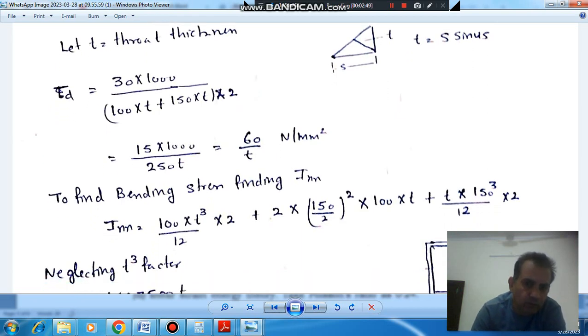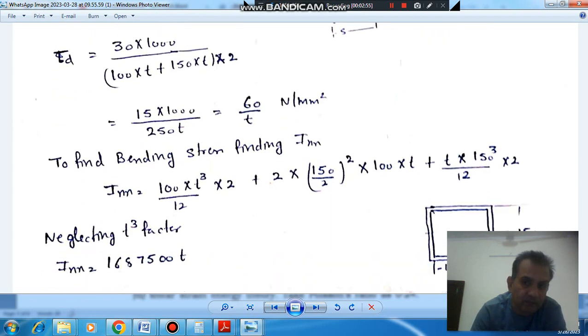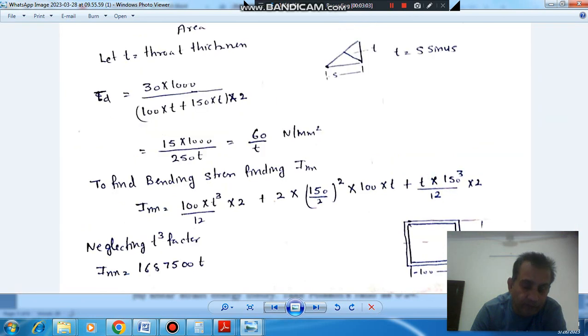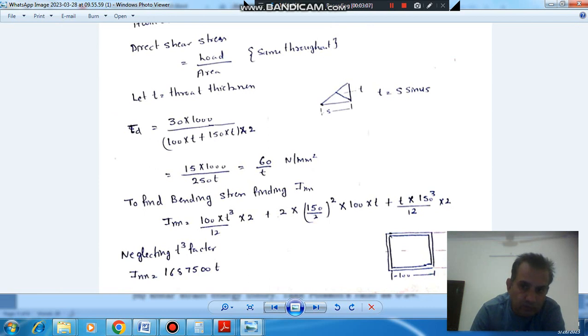So now this load will cause bending in this, this eccentric load will cause bending in this. And bending will take about X axis of this. So we need moment of inertia about X axis of this. So, now we have to consider, we have to design weld, so we take the moment of inertia of the weld only. So this is your weld and it is the X axis of this.